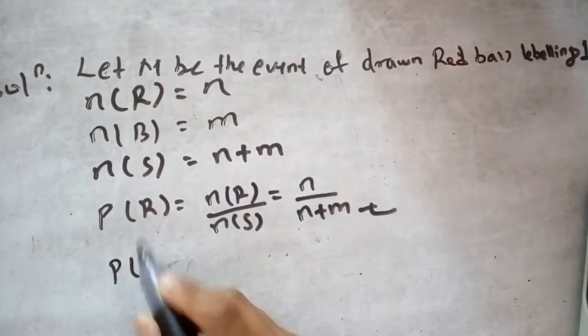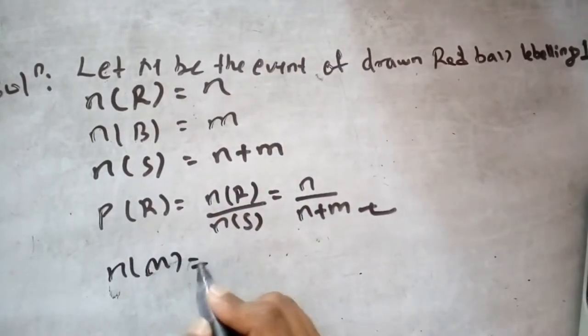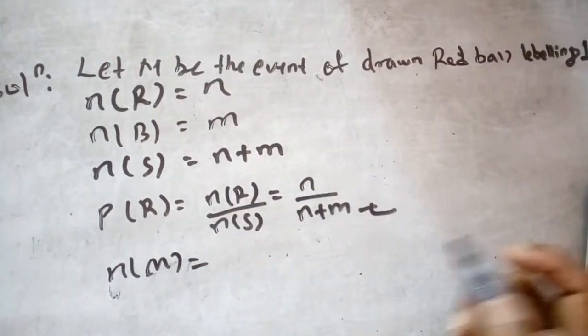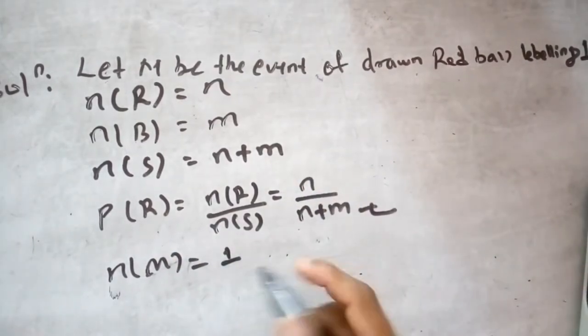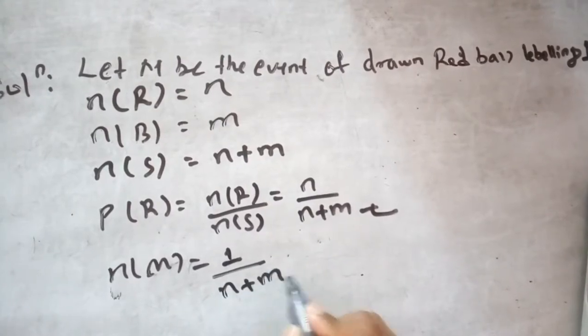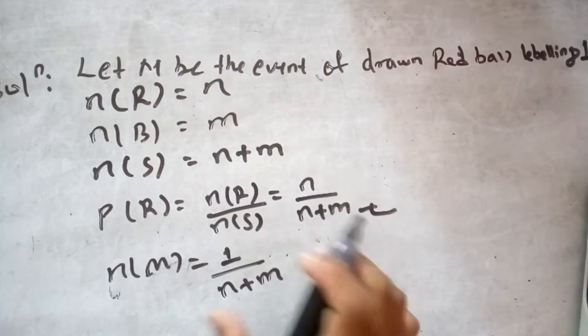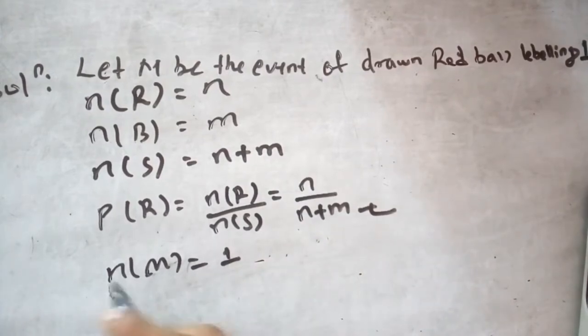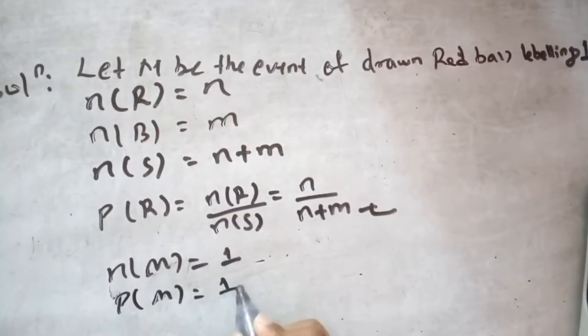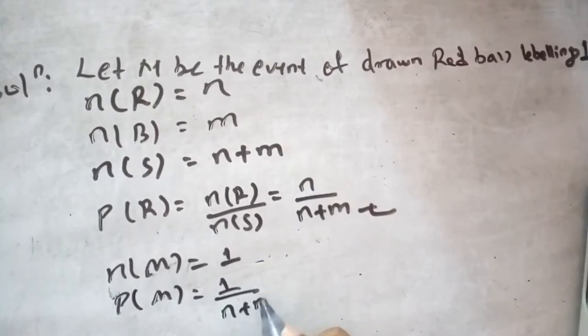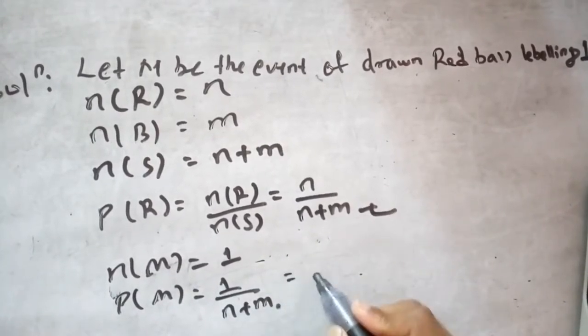Then probability of M: a red ball labeled 1 from the total n+m. So probability of M equals 1 by n plus m.